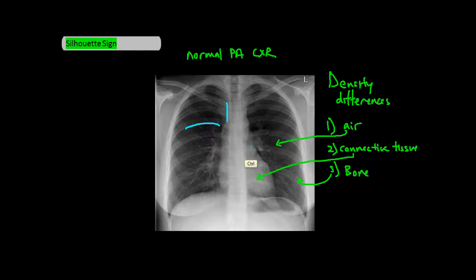In instances in which areas of similar densities are next to each other — such as connective tissue next to connective tissue like the chambers of the heart, and air next to air like the lobes of the lungs — there is no contrast in densities, and hence the entire area looks like one large blob with no borders.